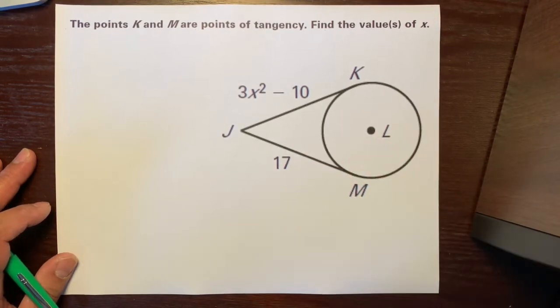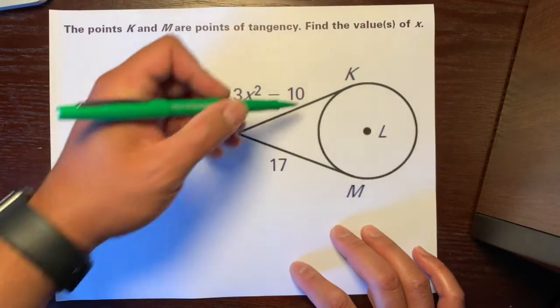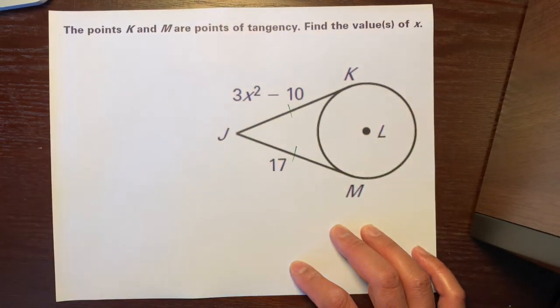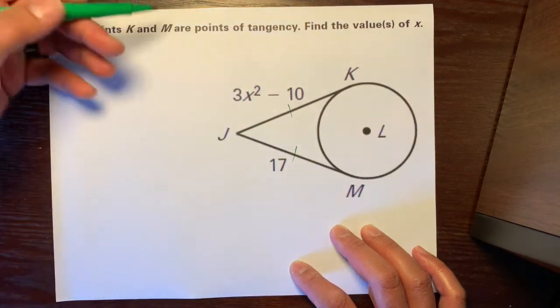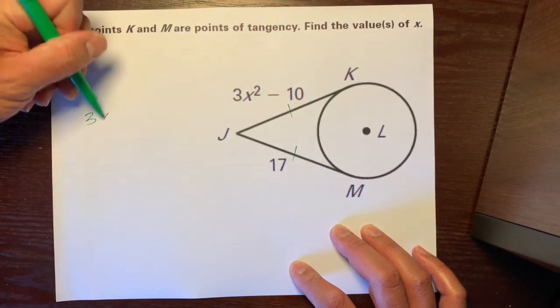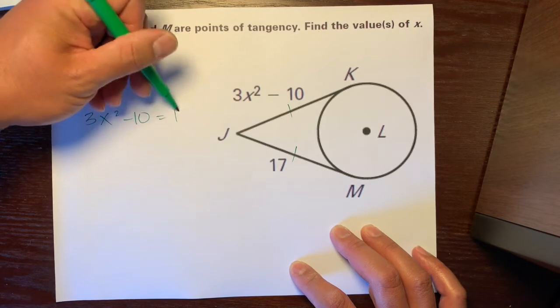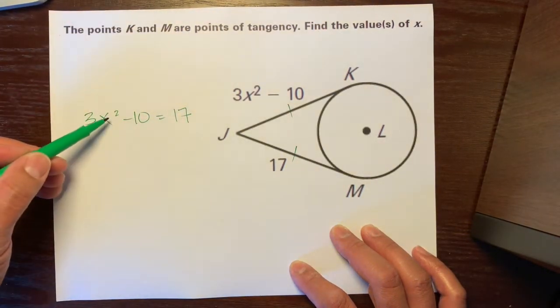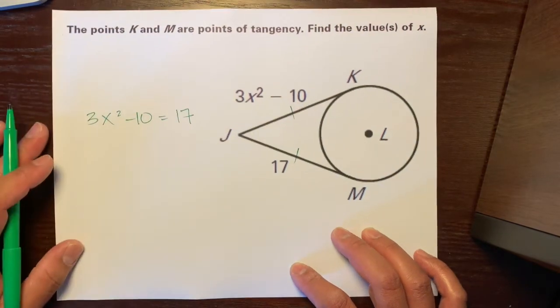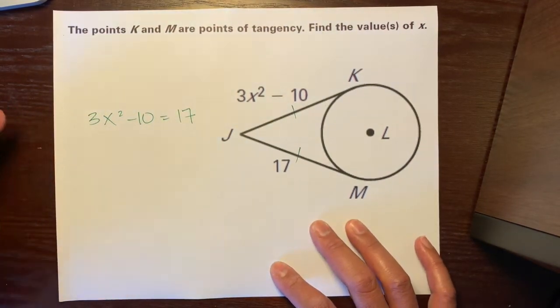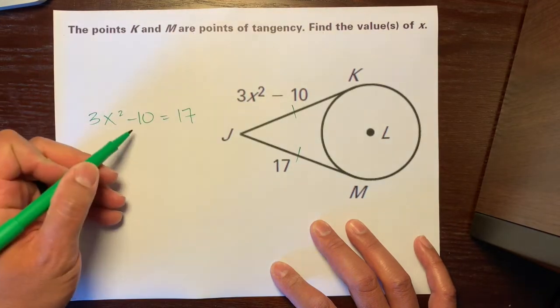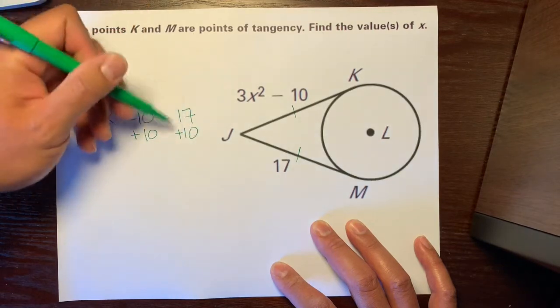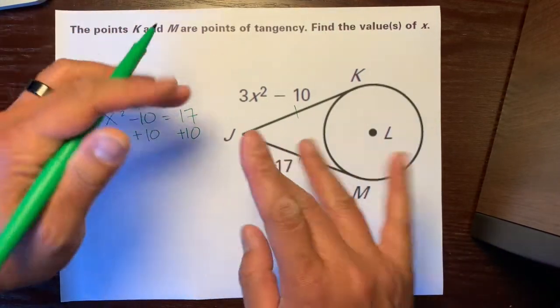So, from the two tangents theorem, we know that these two tangent segments are congruent to each other. So, we could put a tick mark there and there, and just set them equal to each other. So, 3x squared minus 10 is equal to 17. And don't get intimidated because there's a square there. It's okay. There's a few ways to do this. Well, let's do the shortest and the fastest, and hopefully the easiest way. Let's take this negative 10. Let's add it to both sides. 17 plus 10 is 27.